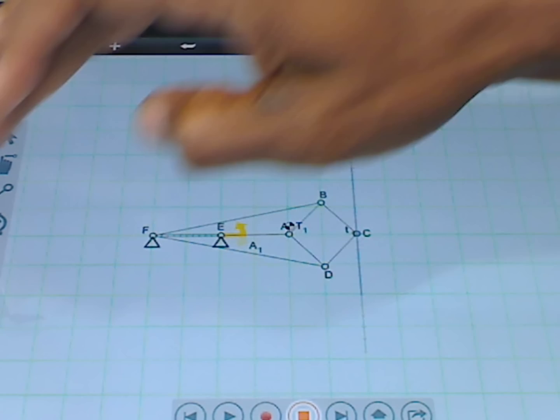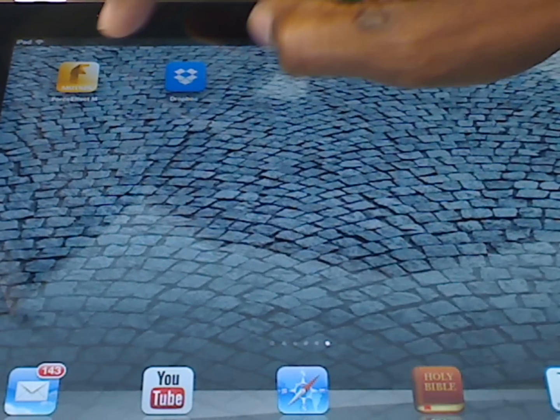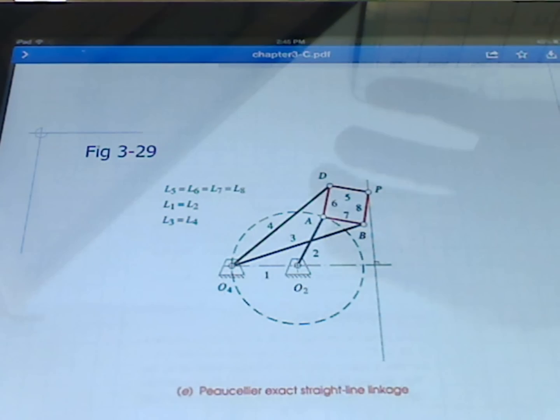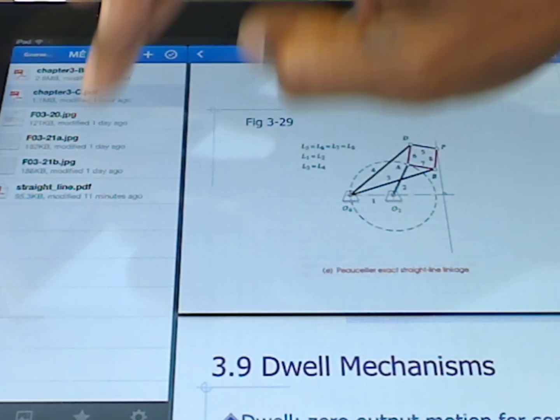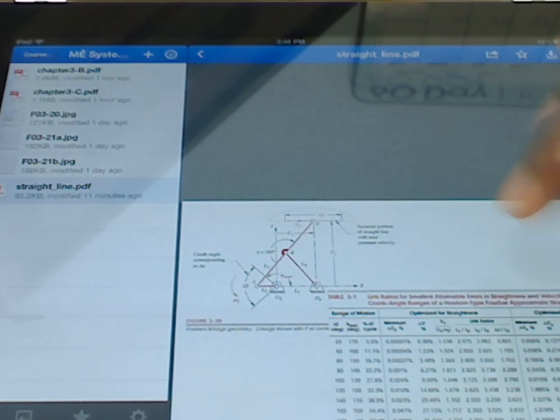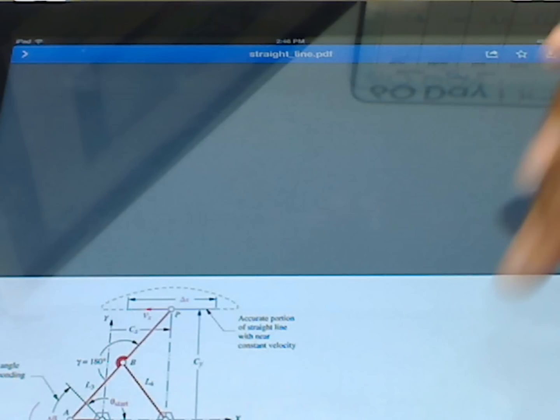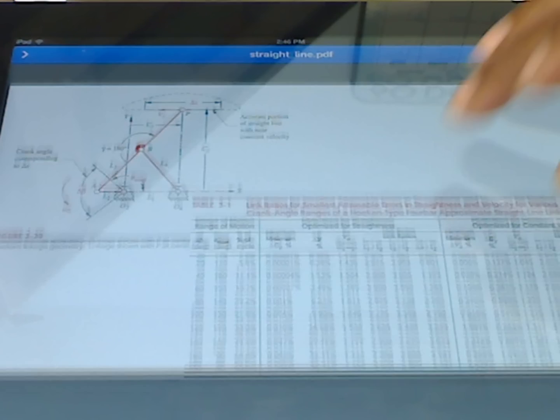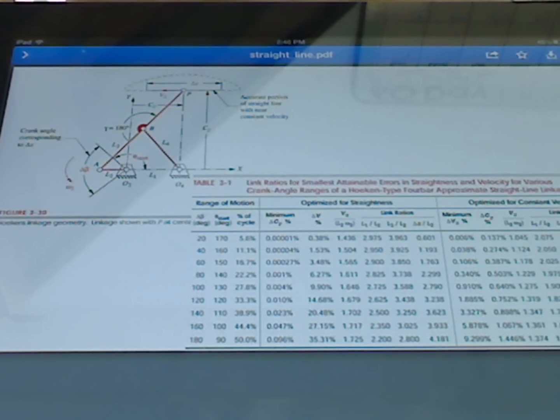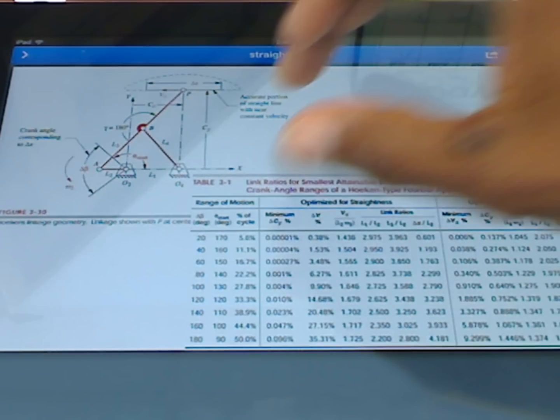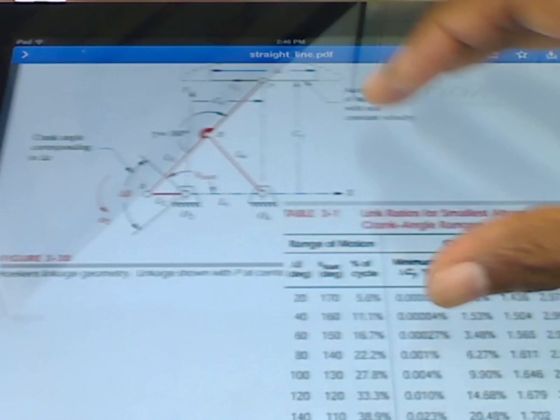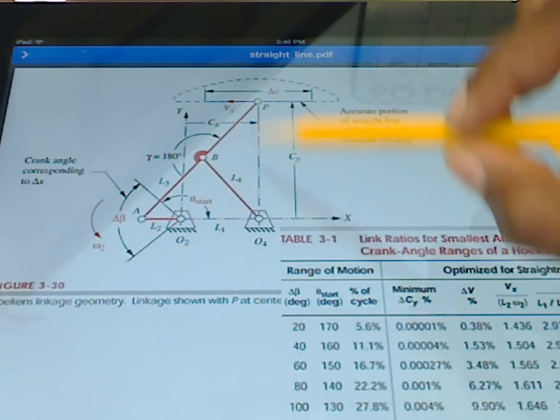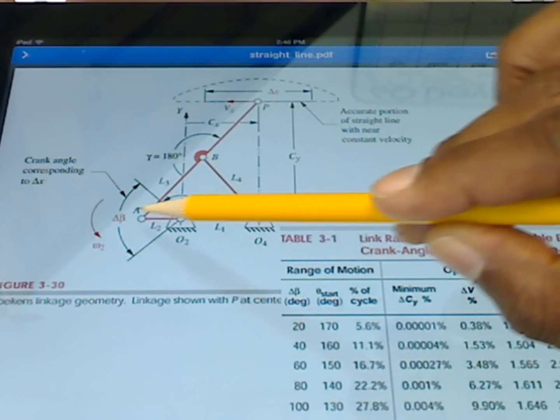Now I want to say a few more things about the Hoeken that we saw. There's some interesting things to see in terms of the Hoeken. I'm going to show you what we have here, this figure. First, I want to focus in on the Hoeken itself, what the linkage looks like.